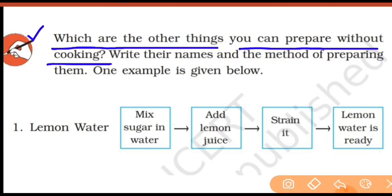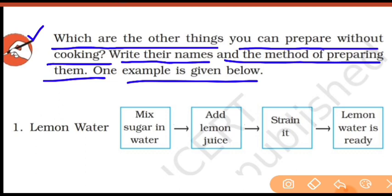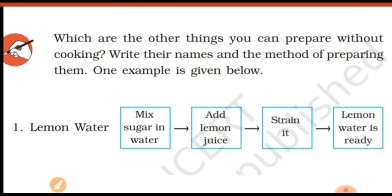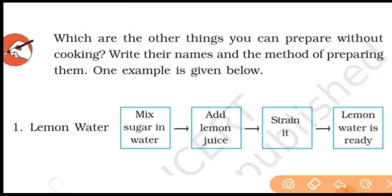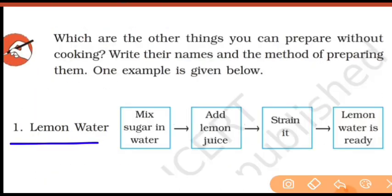Write the names of food items and the method of preparing them — one example is given below. There are many food items you can eat without cooking. The first example is lemon water — how to prepare it: first mix sugar in water, then add lemon juice, strain it and mix well so all sugar and lemon combines. Then your lemon water is ready.